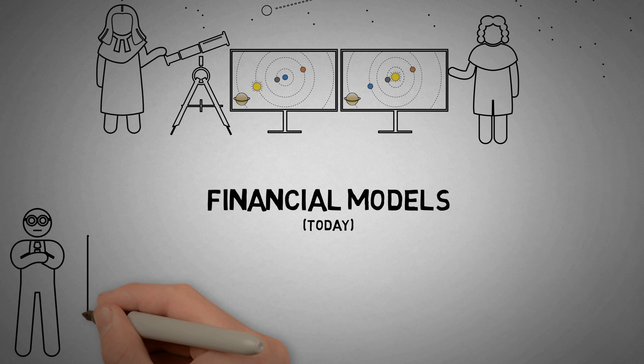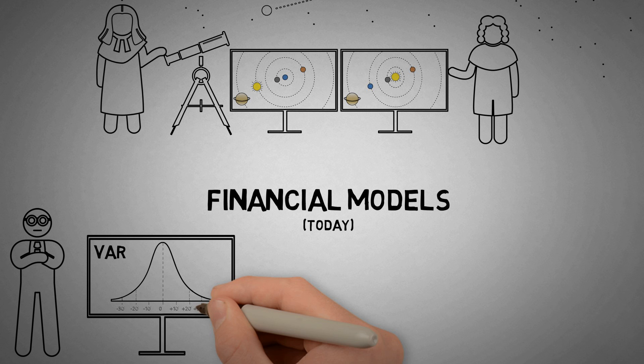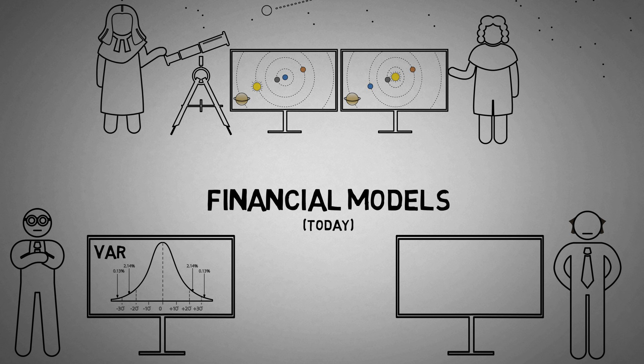The story today is chillingly similar. The financial establishment is using outdated financial models like value at risk and the bell curve. Jim argues that the market actually resembles a complex system, with independent actors responding to market feedback and adjusting their behavior accordingly. Using this model, in 2007, Jim was able to see the 2008 crisis coming.